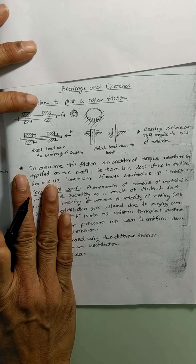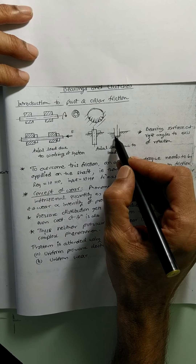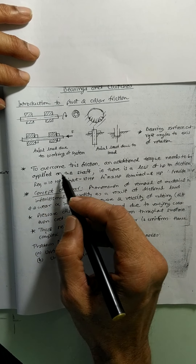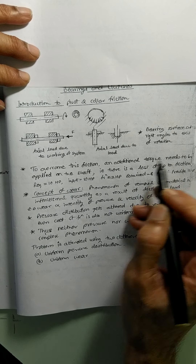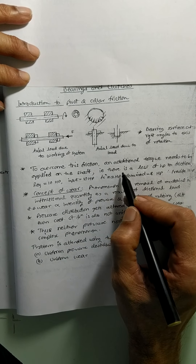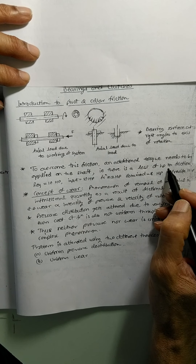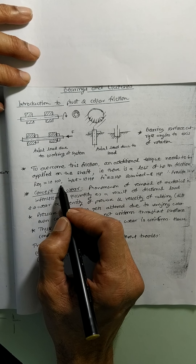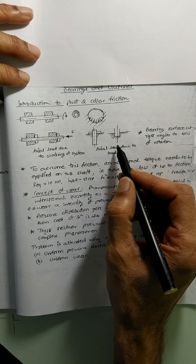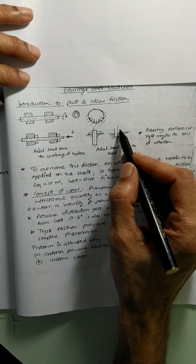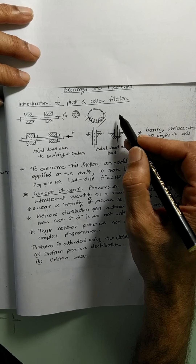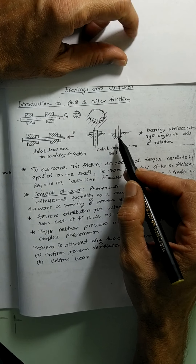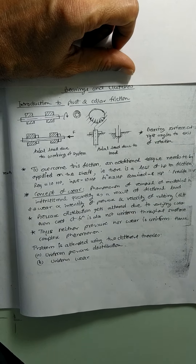There is a loss of horsepower, meaning a loss of power in friction. For example, suppose the shaft has 10 hp of power — you are inputting 10 hp from the machine. But suppose there is friction resulting in a loss of 2 hp. That means even though you supply 10 hp, there is a loss.